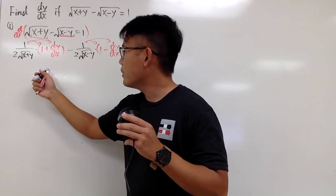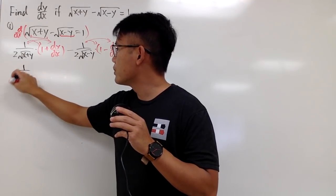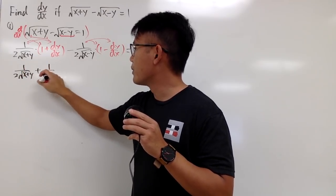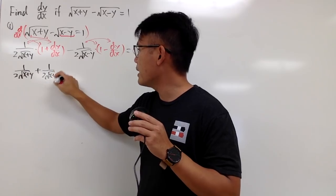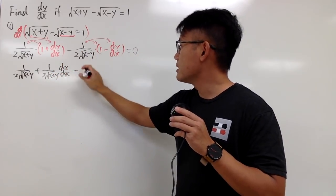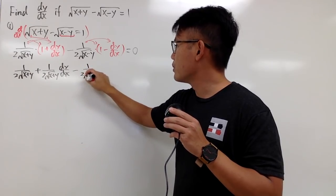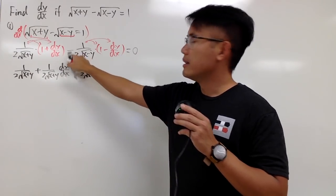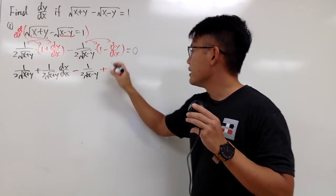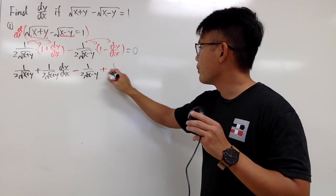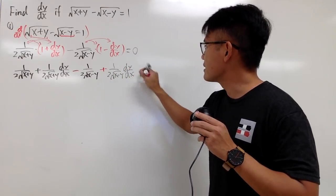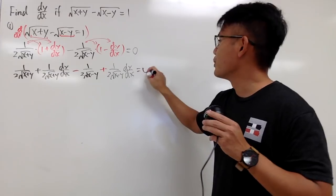So for this right here, it's 1 over 2 square root of (x plus y) times 1, and then plus 1 over 2 square root of (x plus y) times dy/dx. Then this times that is minus 1 over 2 square root of (x minus y), and this times that is plus 1 over 2 square root of (x minus y) times dy/dx. This is still equal to 0.